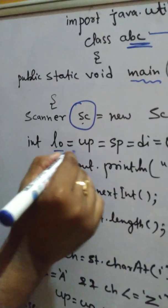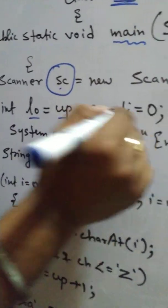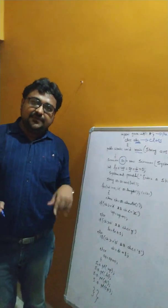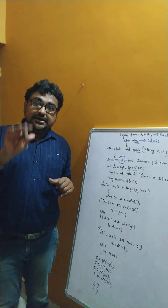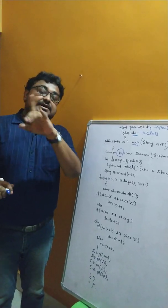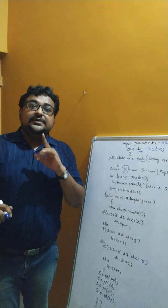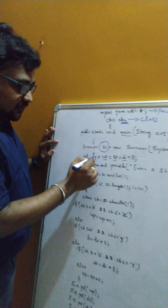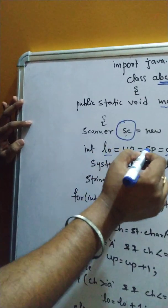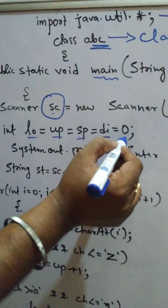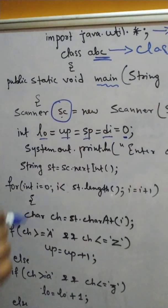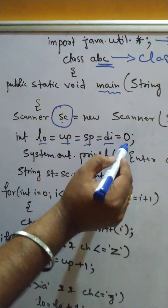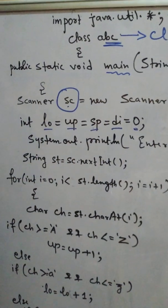Then I made four variables, l, o, u, p, s, p, d, i. I think the first time you have seen this type of declaration, by me or any of the book, it is not given. But this is the shortcut and the correct way to declare a variable with initialization. So the initial value of l for lowercase, uppercase, special character and digit, 0 is the initial value. So I declared four variables and the value is 0. So within one line, I complete this one.